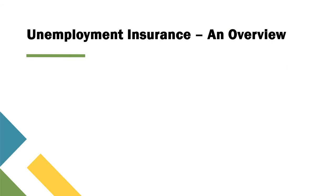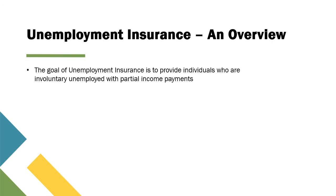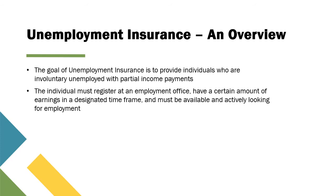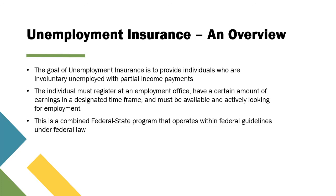First, let's cover the basics of unemployment insurance. The goal of unemployment insurance is to provide individuals who are involuntarily unemployed with partial income payments. The person seeking unemployment compensation must register at an employment office, have a certain amount of earnings in a designated time frame, and must be available and actively looking for employment. This is a combined federal-state program that operates within federal guidelines under federal law.